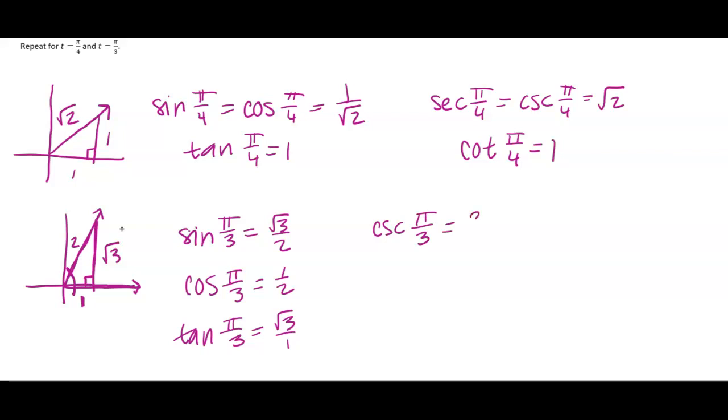Cosecant of pi over 3, hypotenuse over opposite, secant of pi over 3, hypotenuse over adjacent, and cotangent of pi over 3, adjacent over opposite.